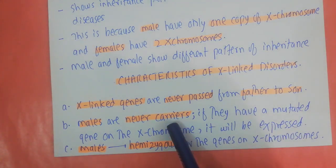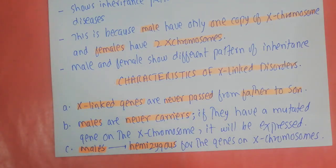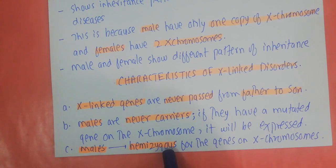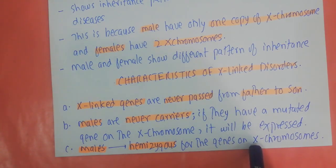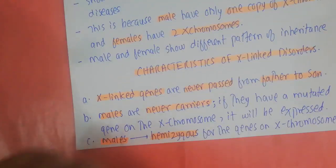Females can be carriers in X-linked recessive disorders but not in X-linked dominant diseases. Another important concept is that males are hemizygous for genes on the X chromosome — hemizygous simply means half. Since males have one X chromosome compared to females' two, the number of genes on the X chromosome is half in males, which is why we say males are hemizygous.